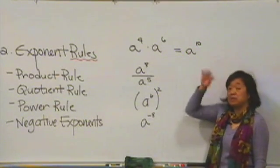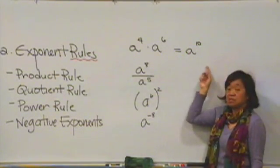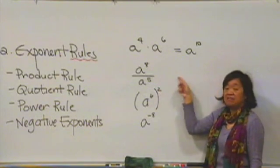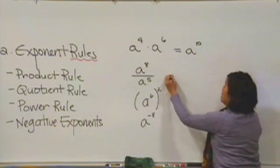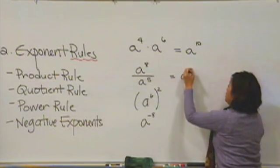On this one, if you can picture it, you would have eight a's on the top. You would have five a's on the bottom. There would be a bunch of canceling that went on. And once you were done, there would be three a's left.